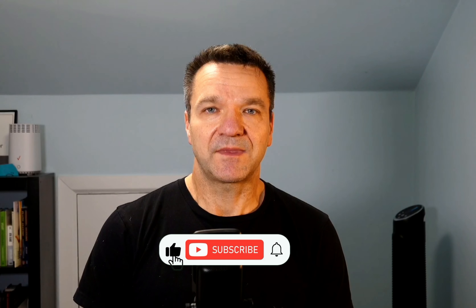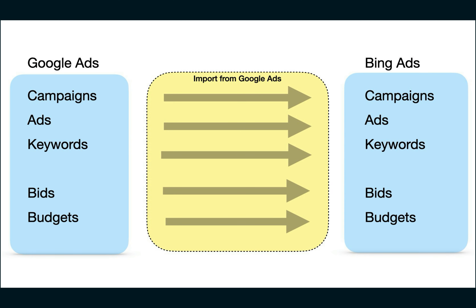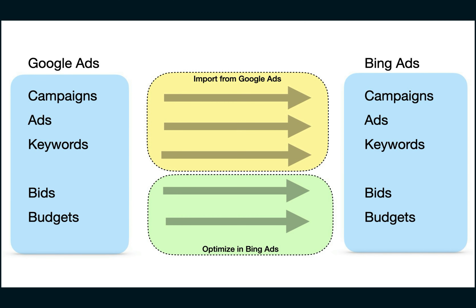But it doesn't have to be this way. You can still make extra sales on Bing with decent ROAS if you follow this simple method I use for my accounts. Instead of doing a full Google Ads backup, I import only keywords, ad copy and most of the campaign structure, but not budgets and bidding. Because Bing Ads has a smaller viewer audience than Google's, its budgets and bidding must be optimized directly in Bing Ads to reach optimal results.